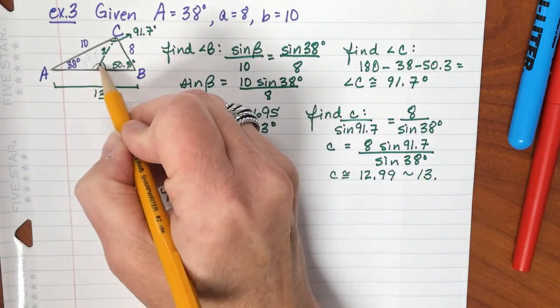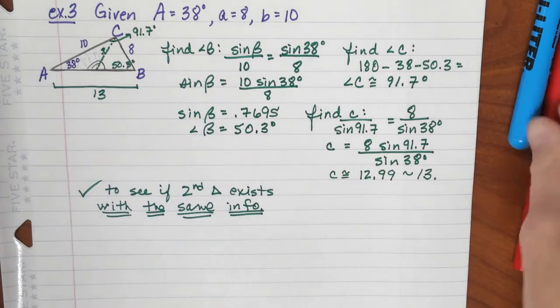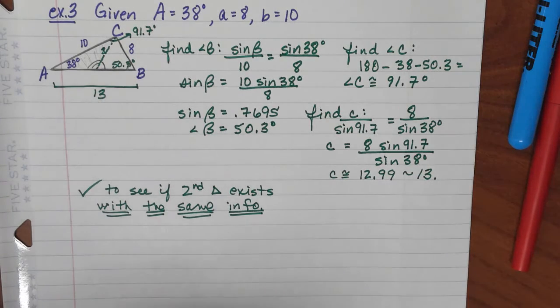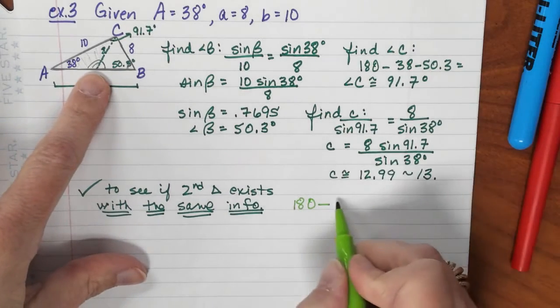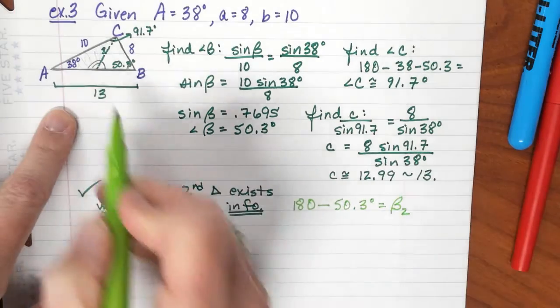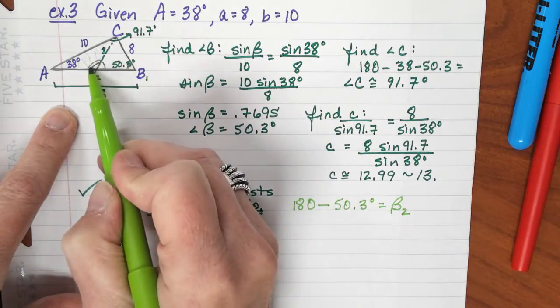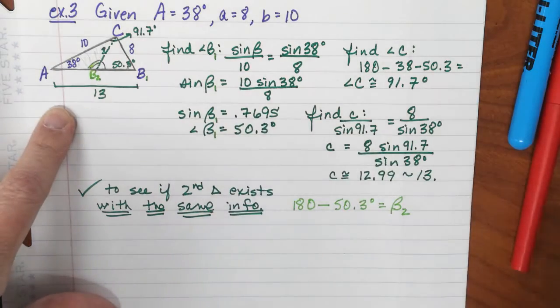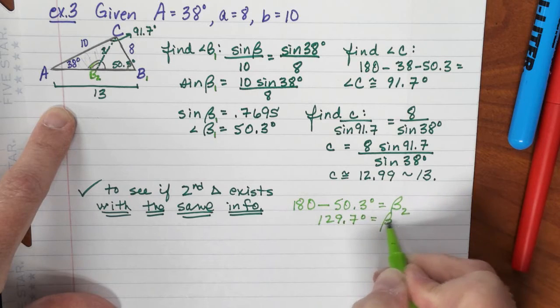Because the sum is 180. They're supplementary, so I can take one. Let me pick which color I want to work in. Let's try a light green. If I take the 180 and I subtract my 50.30, that will give me, let's call it B2 because it's along this side. Let's make that B1 and this B2. This angle right here. So, we're going to make that B1 that we found earlier. Does that exist? That gives me 129.7 degrees for that angle, B2.